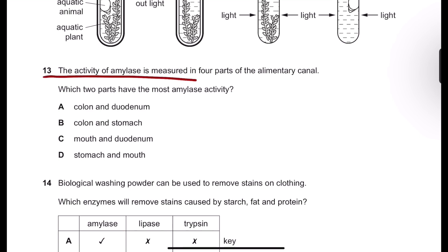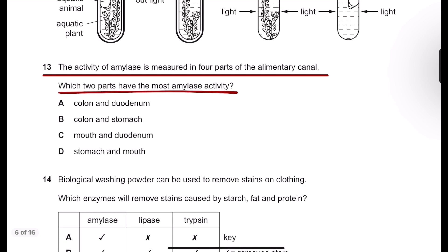Question 13: The activity of amylase is measured in four parts of the elementary canal. Which two parts have the most amylase activity?